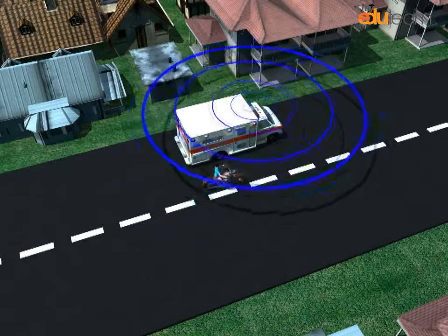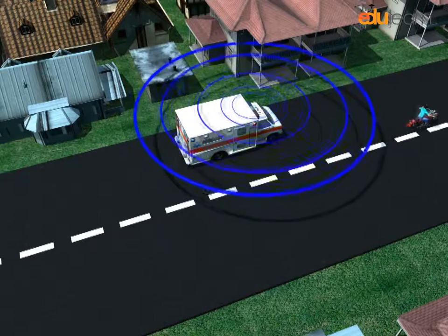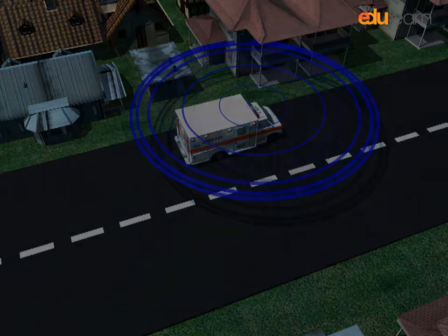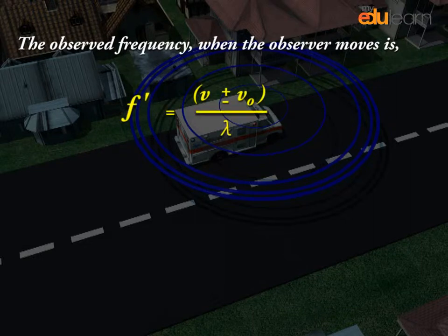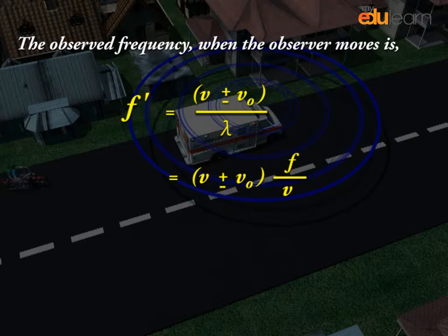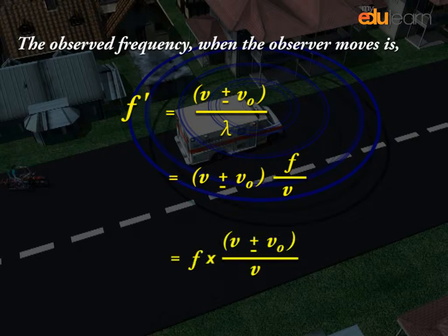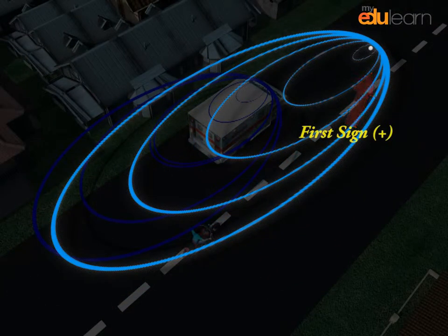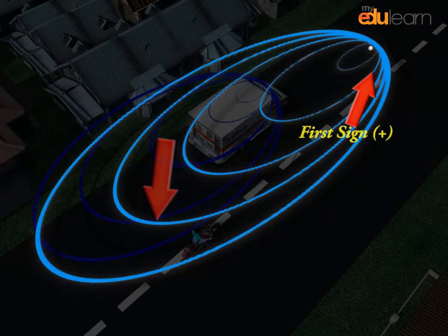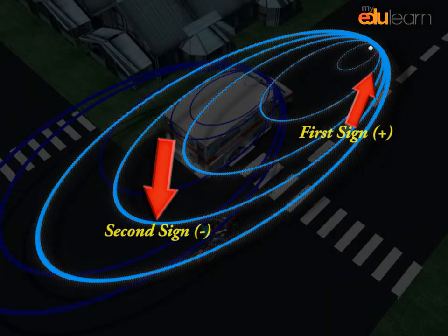If you moved away from the source, the observed frequency is lower. In general, the observed frequency when the observer moves is F' = ((V ± V₀) / V) × F = F × (V ± V₀) / V. Use the plus sign when the observer moves towards the source and the minus sign when the observer moves away.